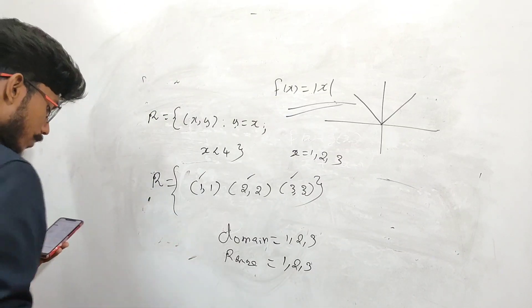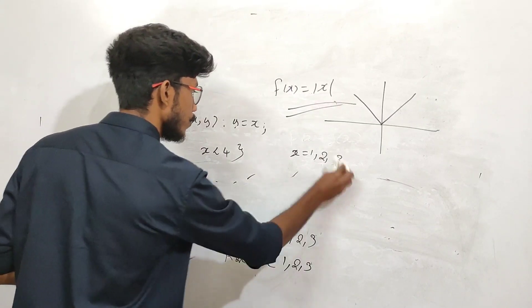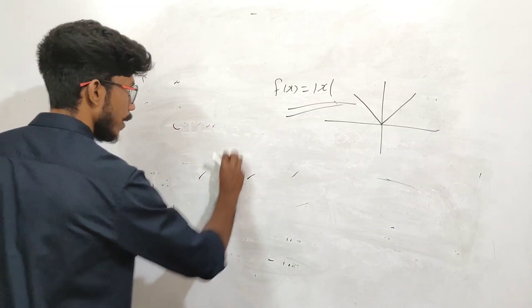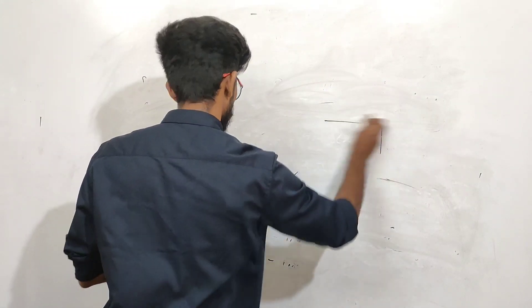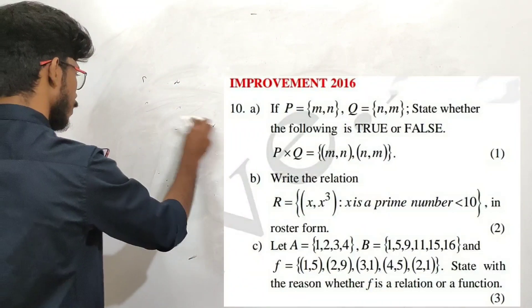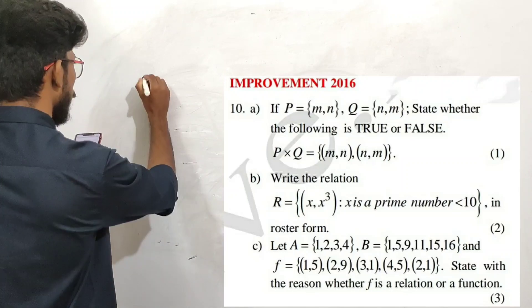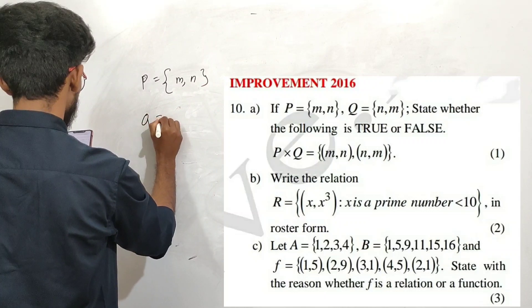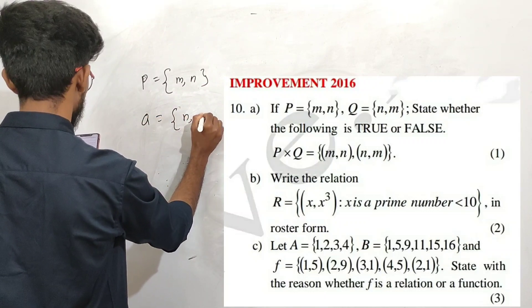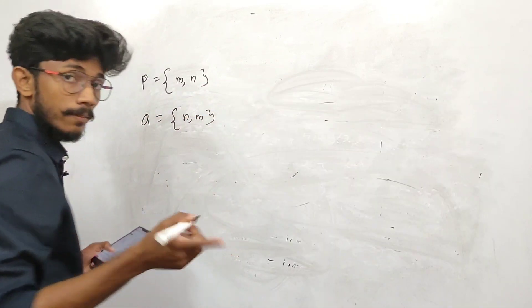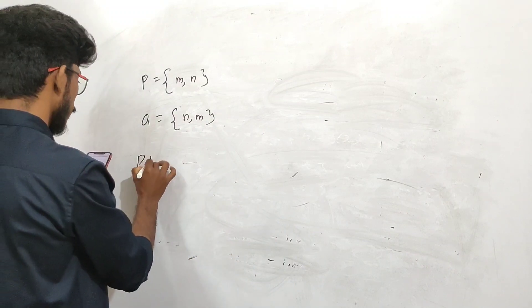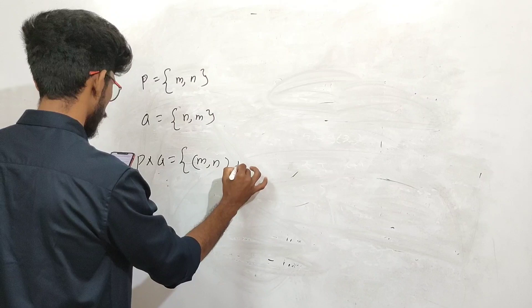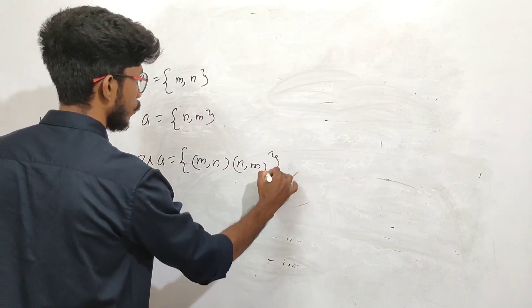If P equals mn and Q equals nm, state whether P cross Q equal to mn, nm is true or false. The answer is false.